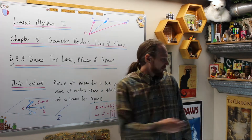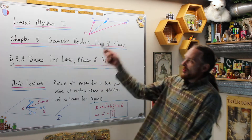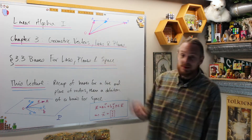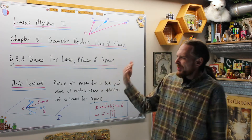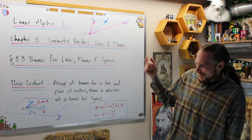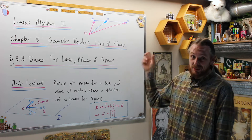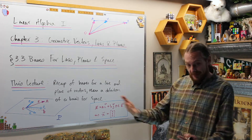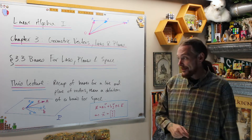Welcome back. This is the Tutor Wizard. I'm Adrian. Please subscribe right here. What we're doing is Linear Algebra 1, Chapter 3, Geometric Vectors, Lines, and Planes. Basically what we're doing is basis for lines and planes in space, and then we're going to describe analytically lines and planes in three-space once we have an idea of what a basis of three-space is.